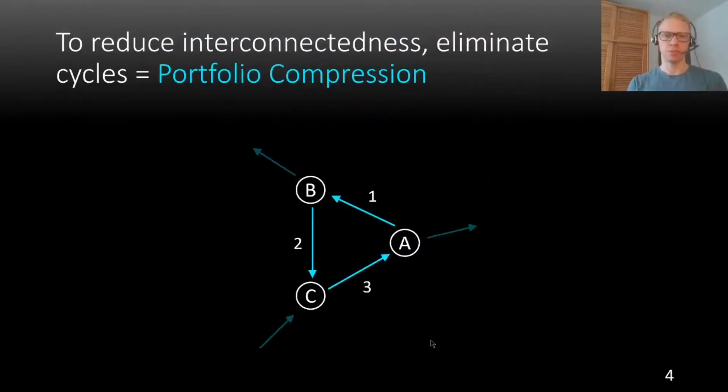Let me give you an example. Here we have a financial network that consists of three banks or other financial institutions: A, B, and C. Between those banks we have liabilities. This means that bank A owes an amount of one to bank B, bank B owes an amount of two to bank C, and bank C owes an amount of three to bank A.